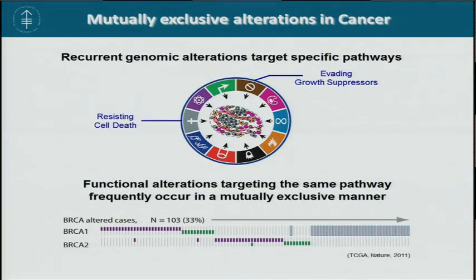Good morning. Today I'll talk about mutual exclusivity between genomic alterations occurring across multiple cancer types. We know that in spite of large heterogeneity, recurrent alterations frequently target few specific oncogenic pathways, and we also recently showed that functional alterations targeting the same pathway frequently occur in a mutually exclusive manner. Here is a nice example from the latest TCGA paper, showing that inactivation of BRCA1 and BRCA2 almost never co-occur.